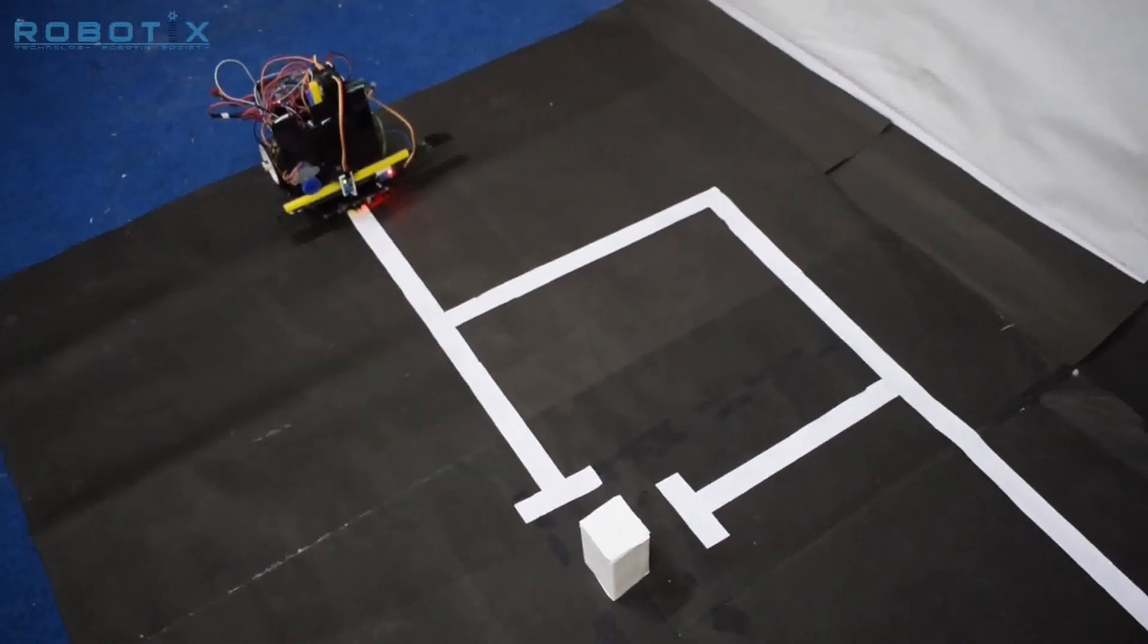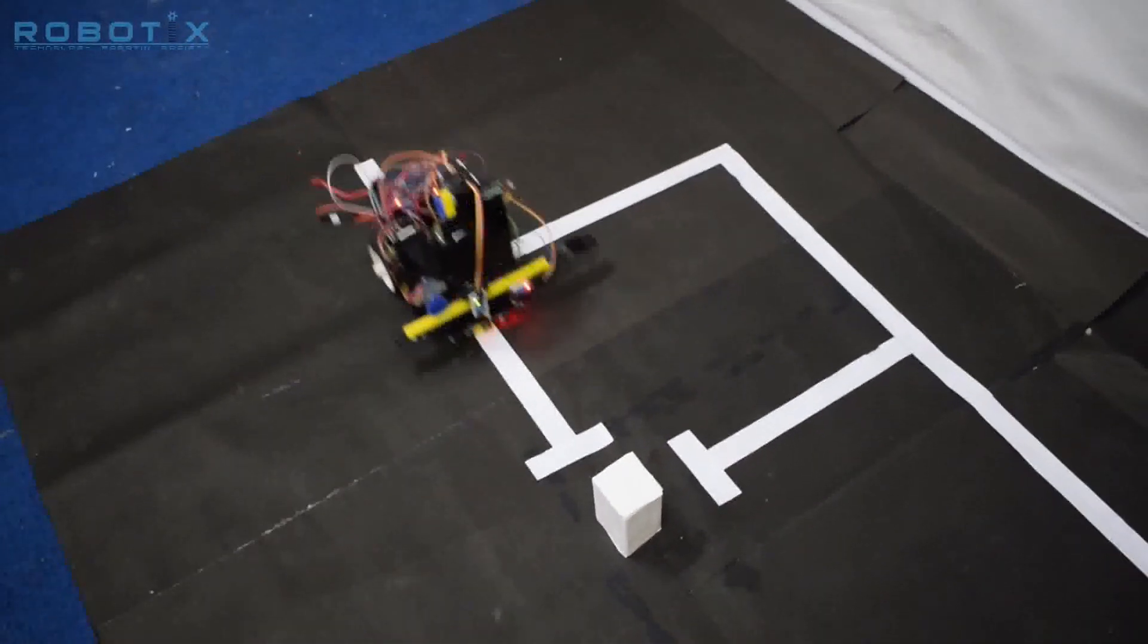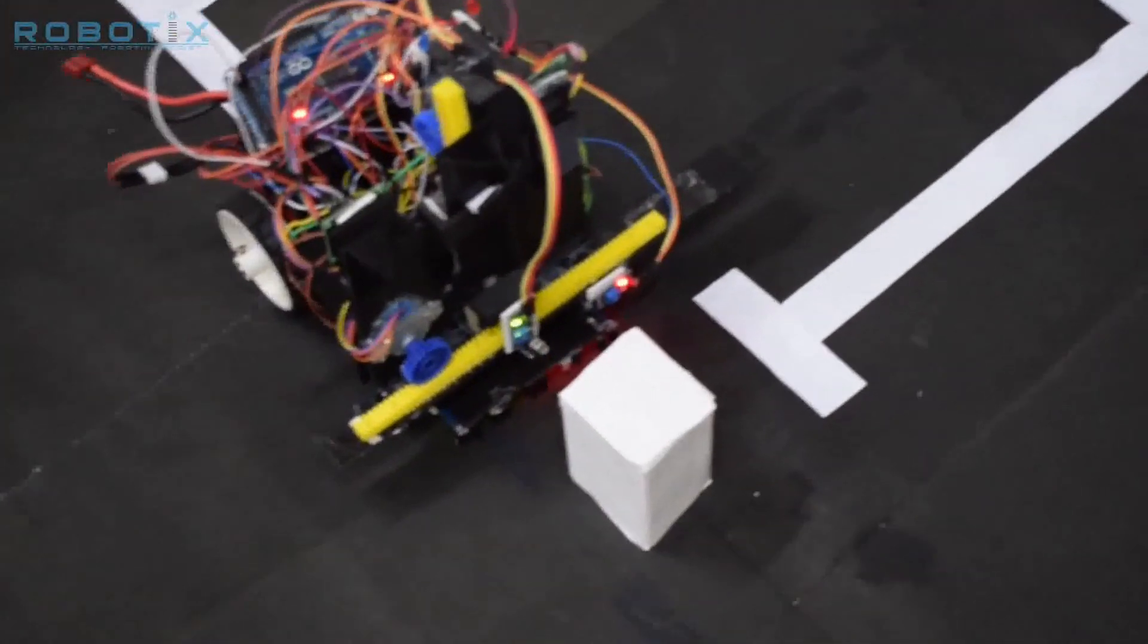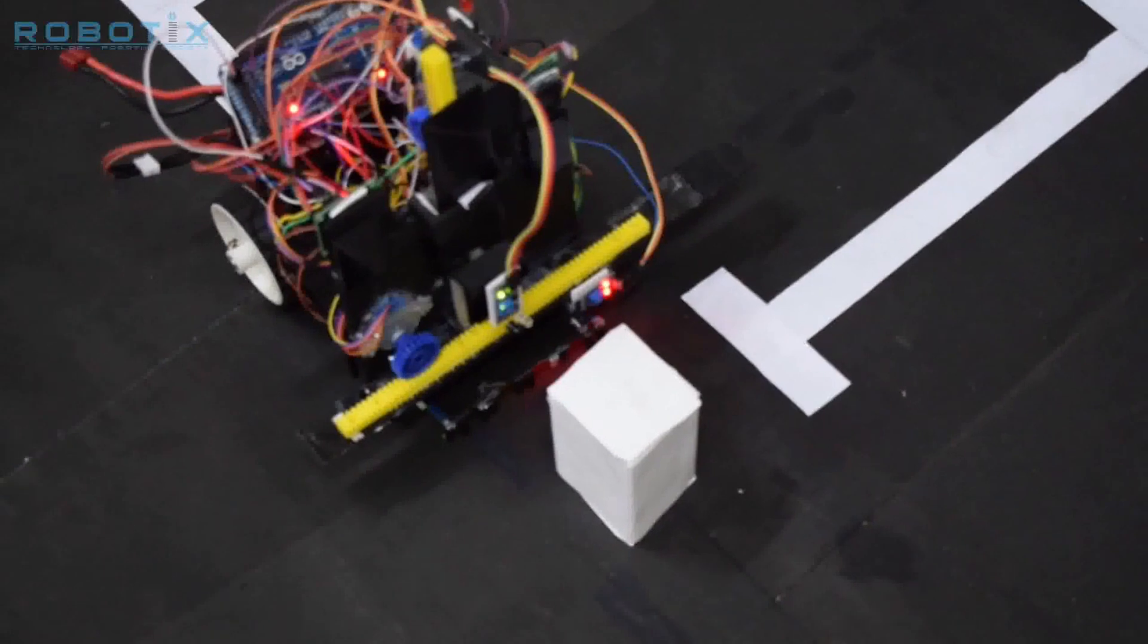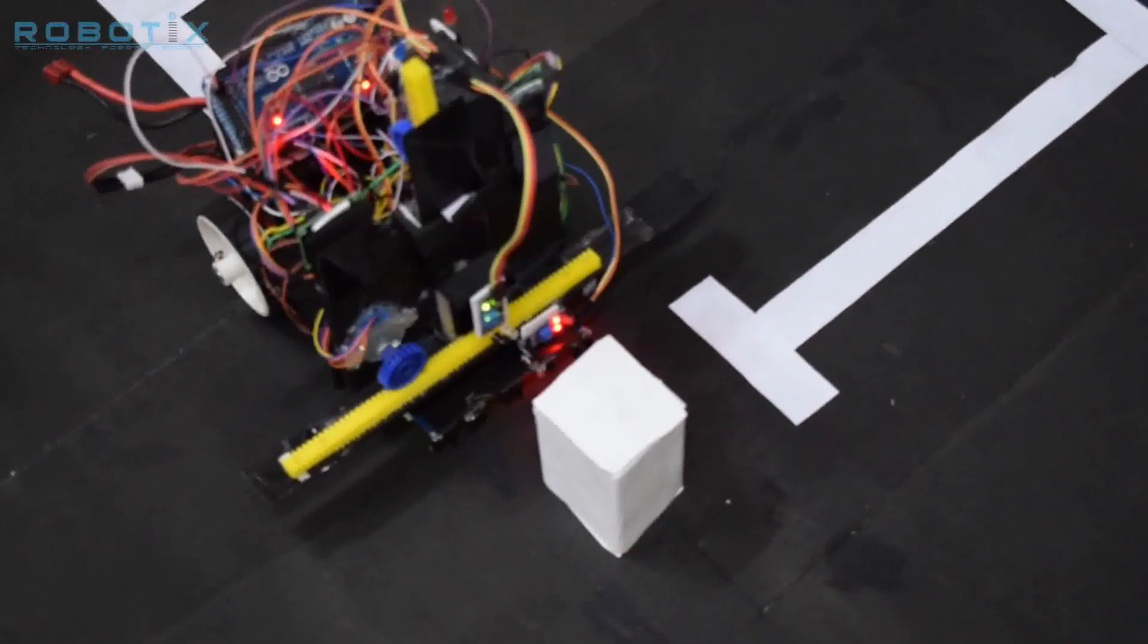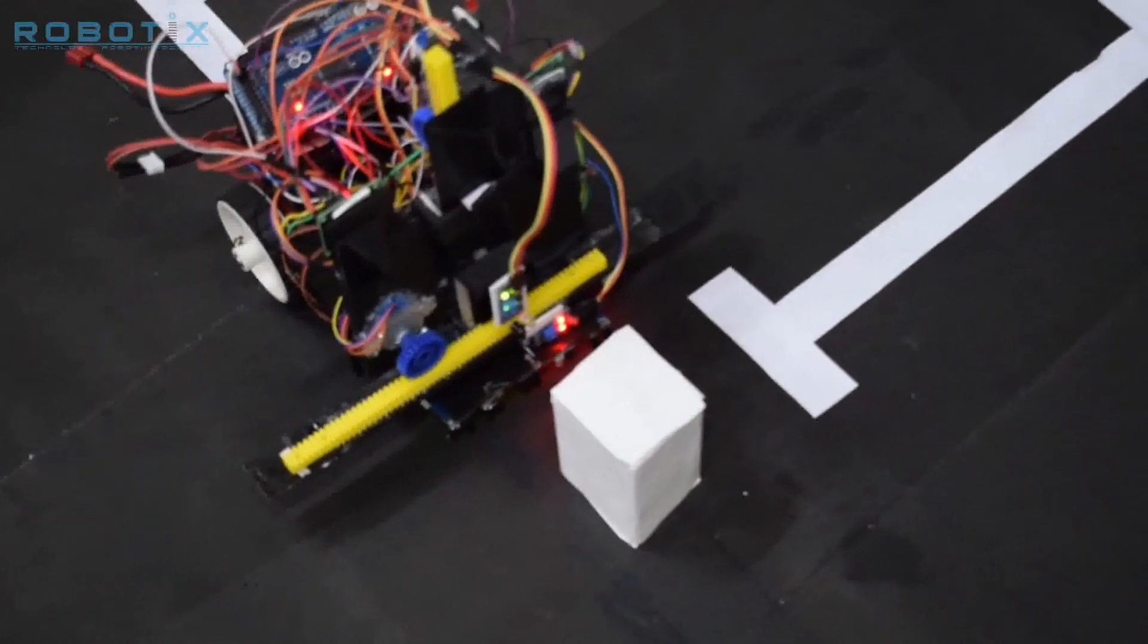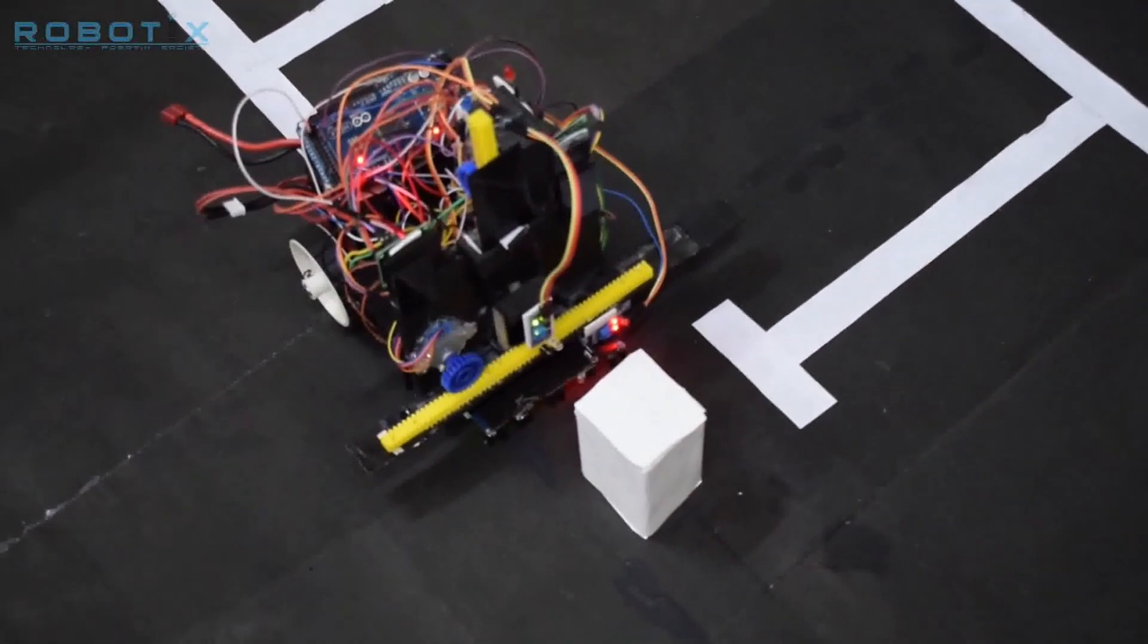This bot is a line follower bot programmed for node traversal and block scanning. It uses a differential drive mechanism for traversal. A rack and pinion mechanism driven by a stepper motor is used for the movement of the IR sensor.